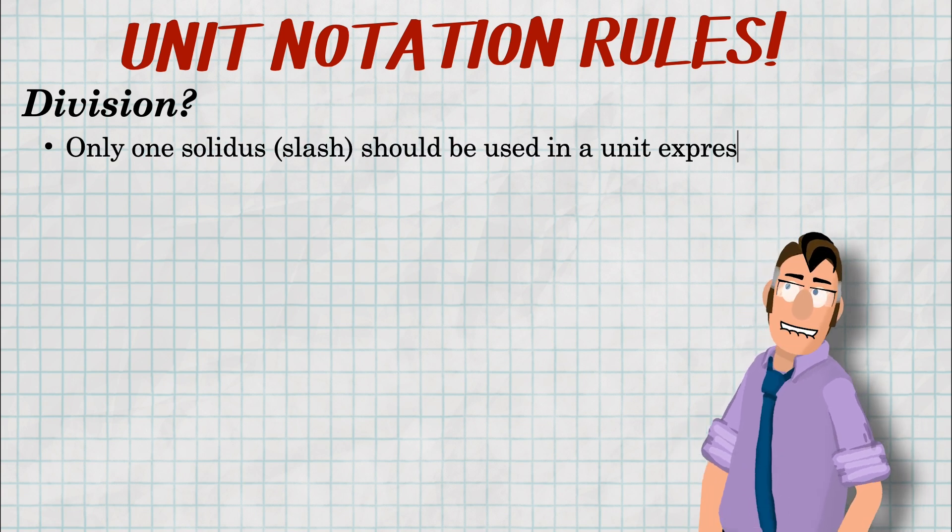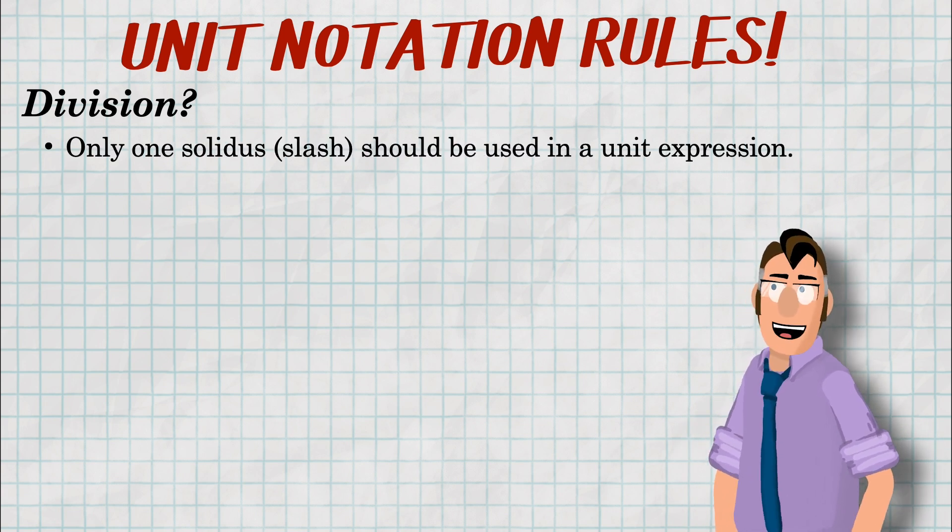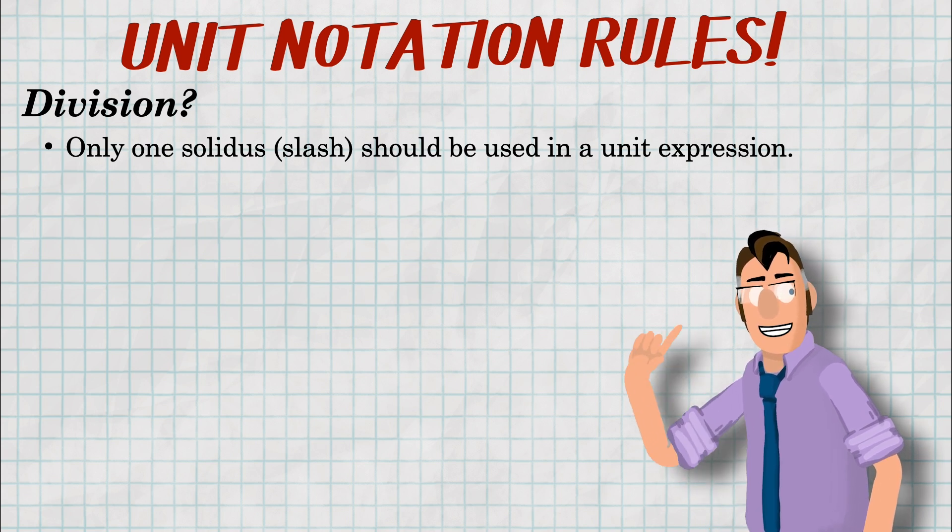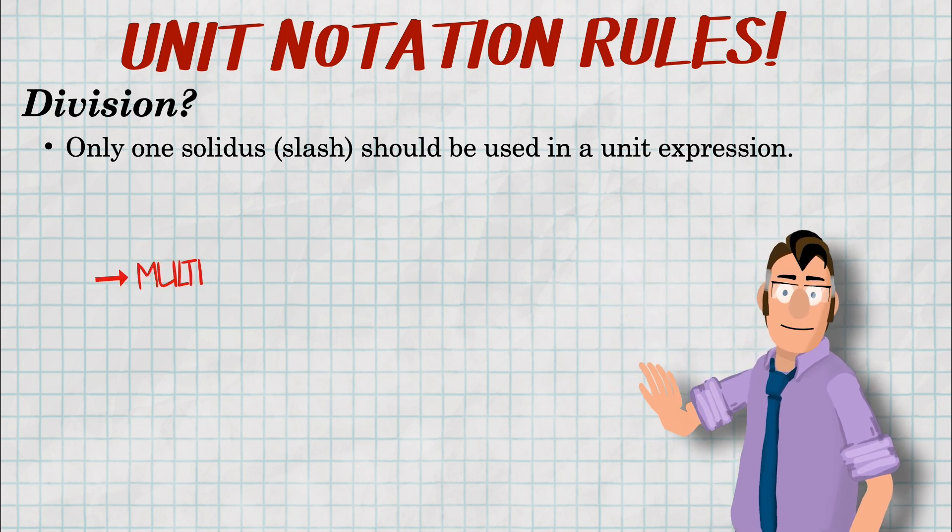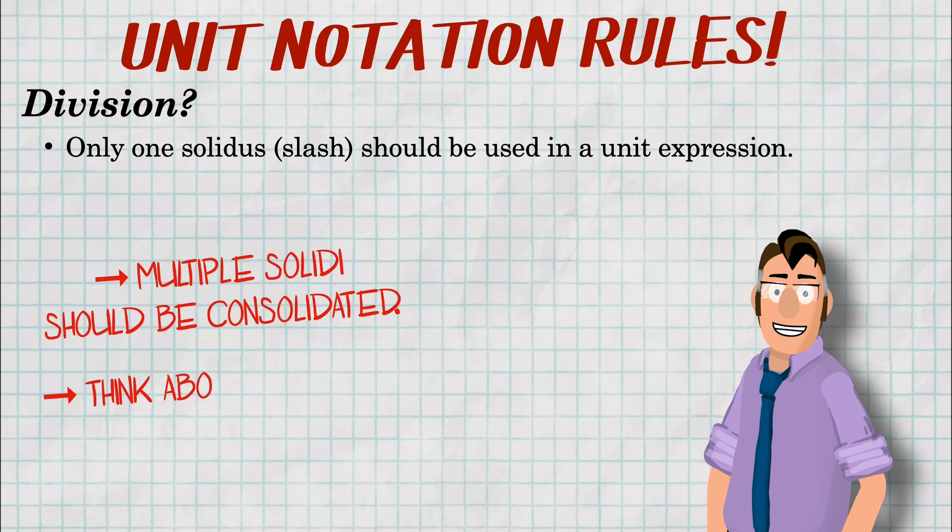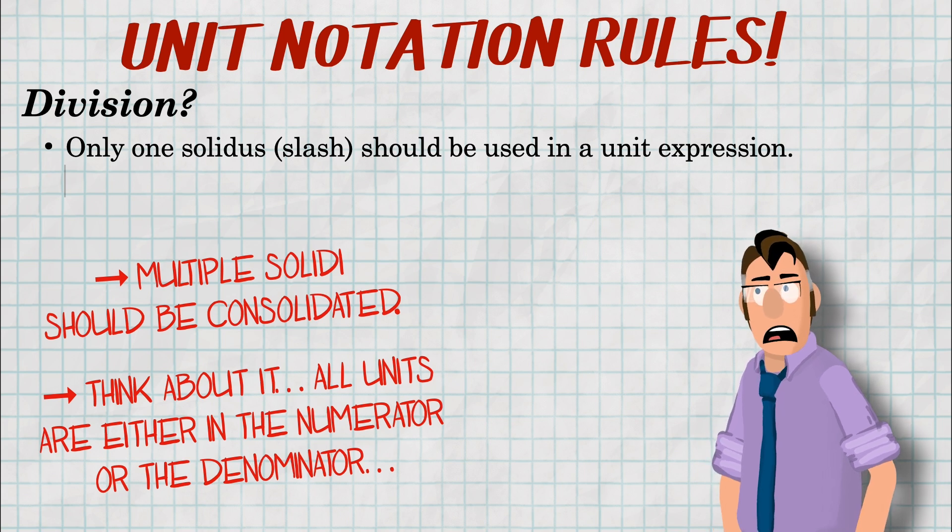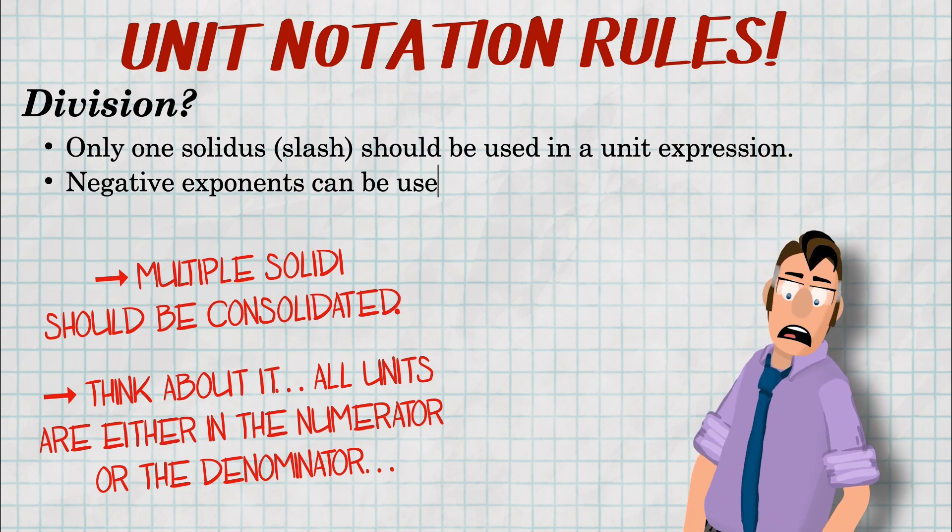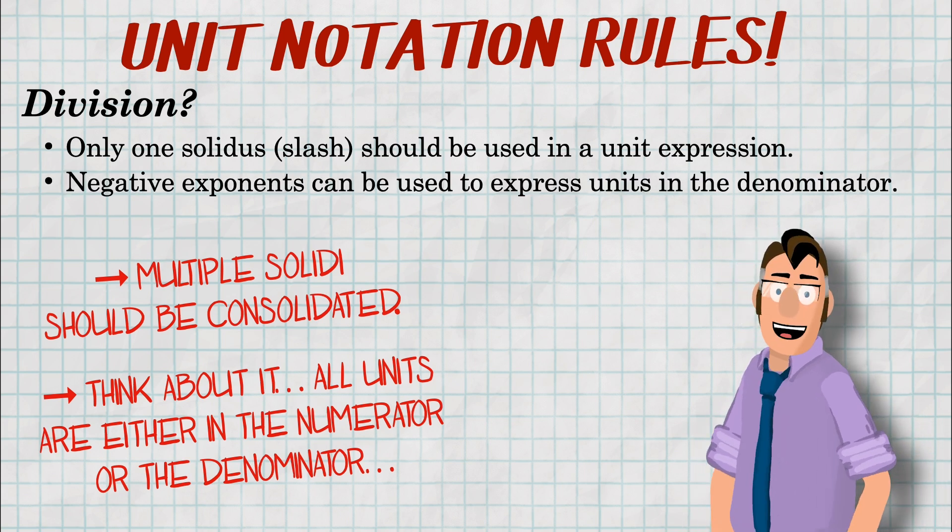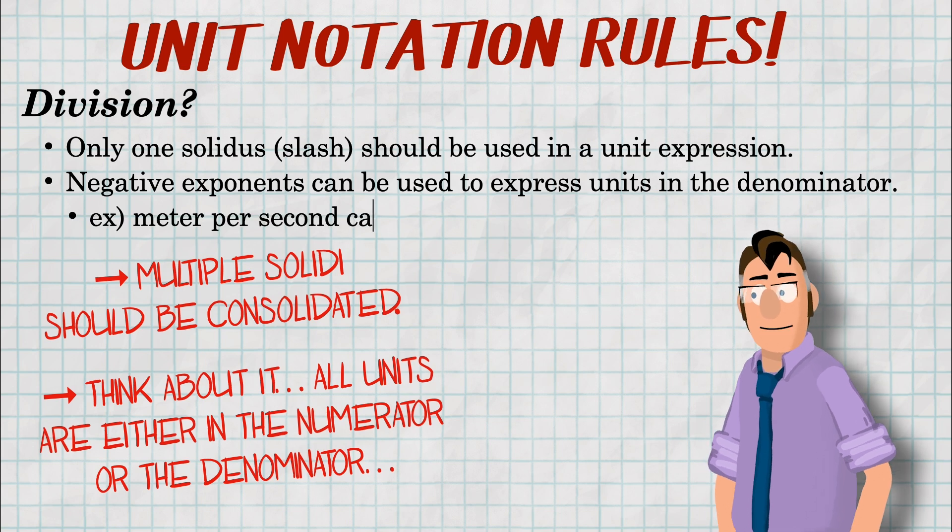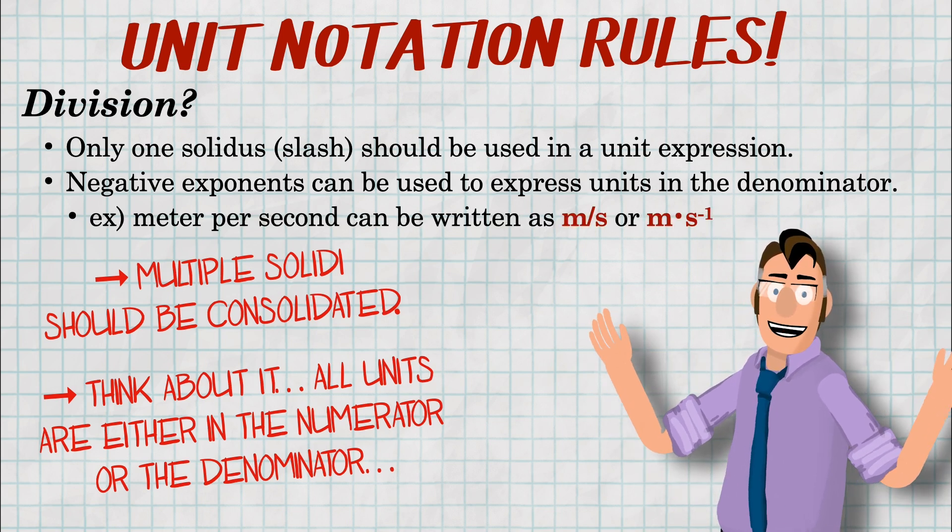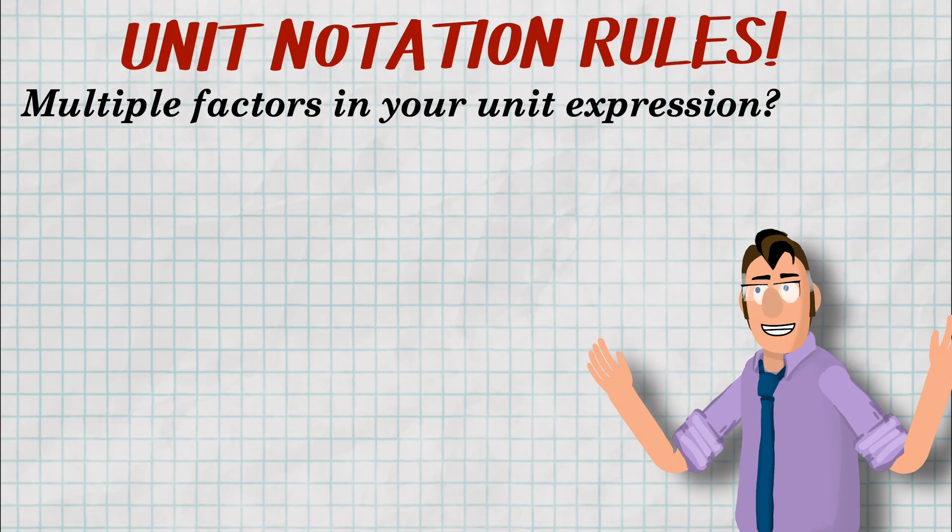In the case of division, and again, I learned something new here, you should only have one solidus per unit expression. And solidus is another name for the division slash. I did not know that. Remember that when you're dealing with units, if you have a fraction, all the units are either going to be on the top or the bottom. If you reorganize your units, then you can set it up so there's only one solidus. Do we need it that way? I don't know, but that's the way the rules are. So you can also express units in the denominator with a negative exponent. I think many kids at the high school level would find this very uncomfortable, but you do see this a lot more in advanced literature. So give it a swing sometimes.